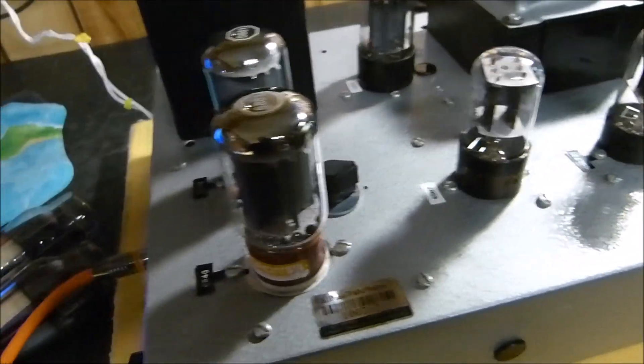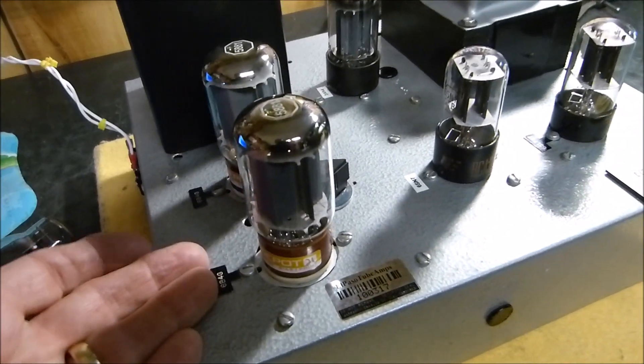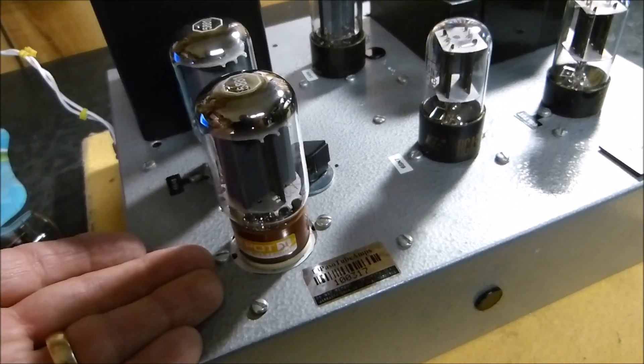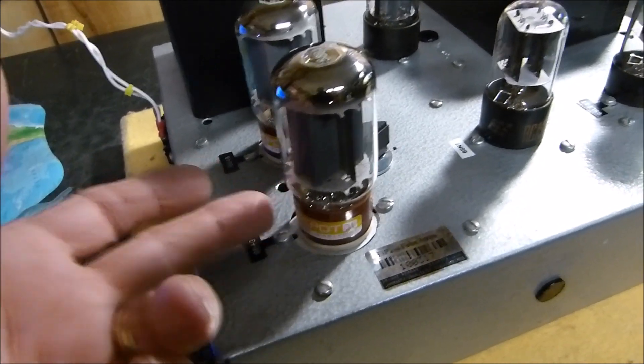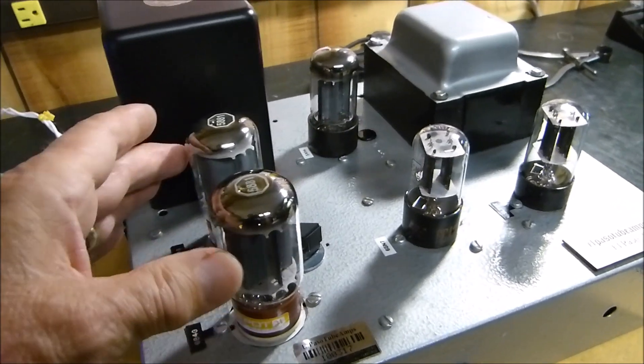The reason I can do that is because they're all octal sockets. Pin 1 is empty, pins 2 and 7 are the filament, pin 3 is the plate, pin 4 is the screen, pin 5 is the control grid, pin 6 is not used, pin 7 again is the filament, and pin 8 is the cathode.